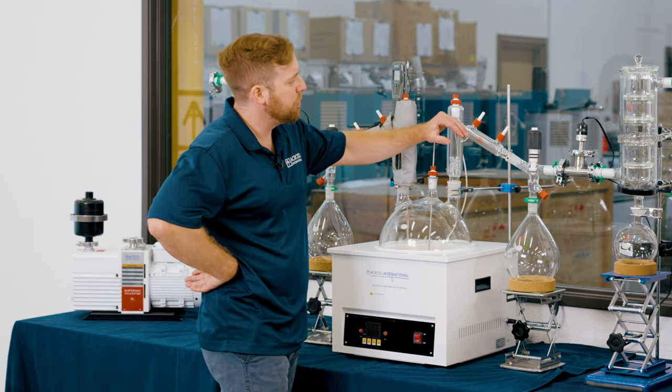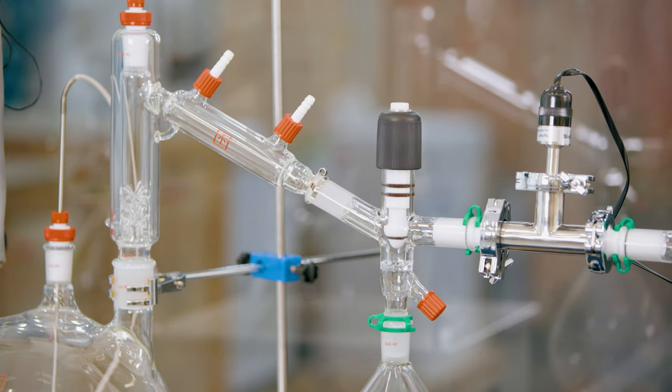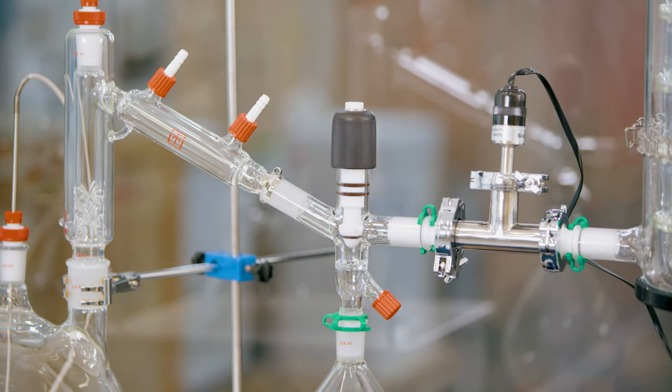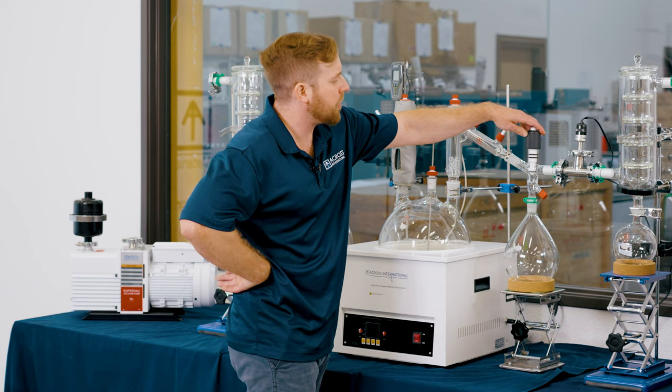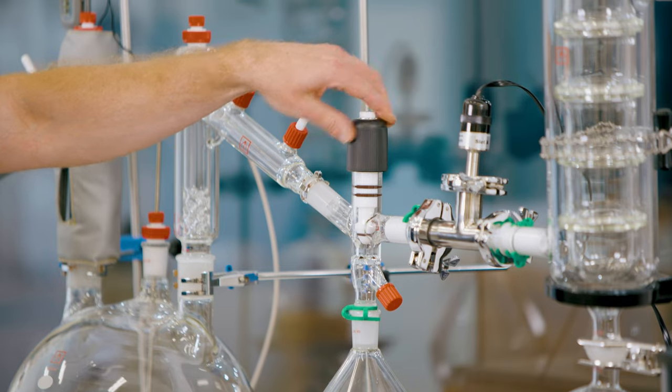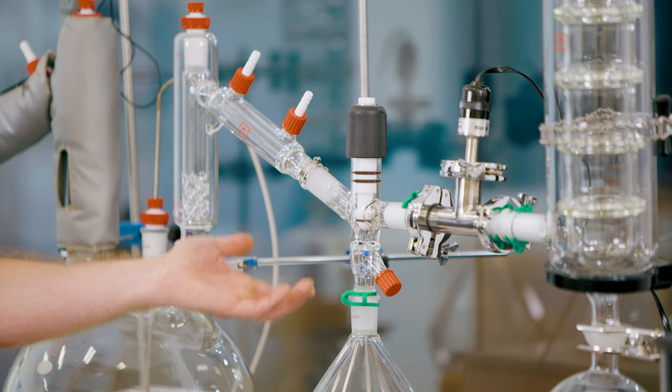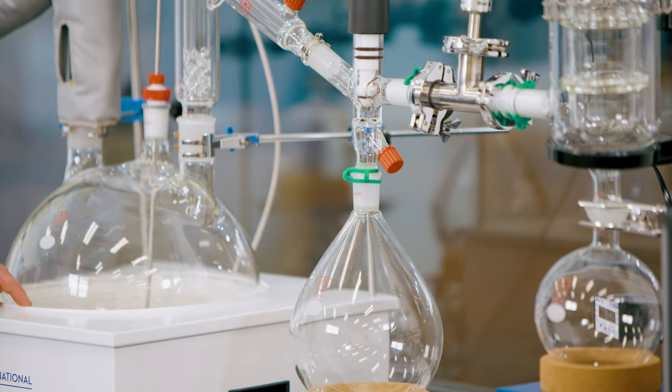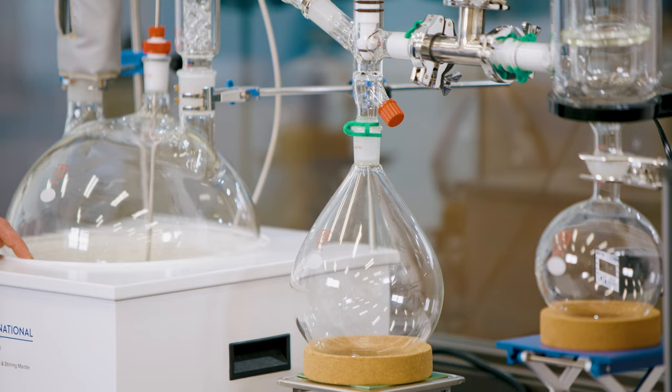From the distillation head, we move over to the Liebig condenser and then down to our mono cow and receiving flask. On the Across International system here, we're going to be able to isolate vacuum and remove this flask in order to swap out between fractions. This is going to give us a lot more functionality and versatility versus the traditional mono cow.